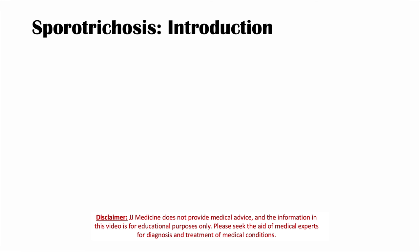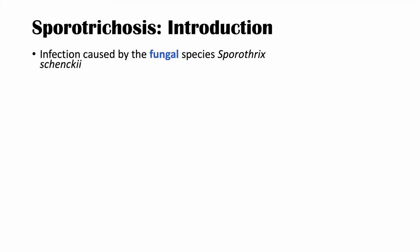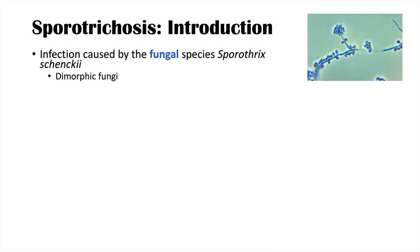This lesson is on the disease known as sporotrichosis. Sporotrichosis is an infection caused by the fungal species known as Sporothrix schenckii, and it is a dimorphic fungi. Sporotrichosis is also known as rose gardener's disease because touching and being in contact with roses and rose bushes is a risk factor for getting this fungal infection.